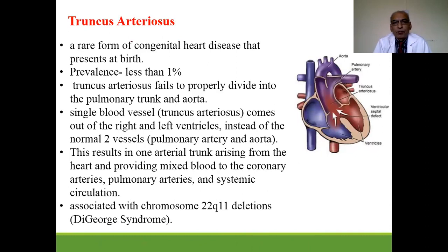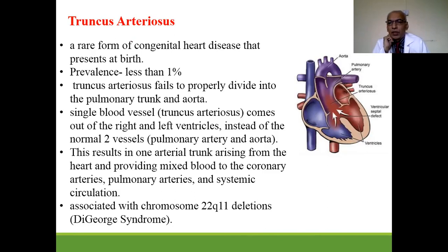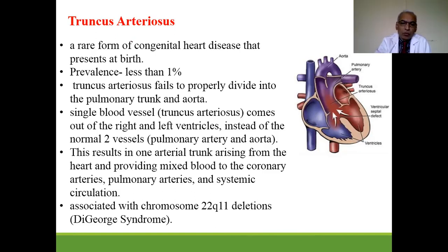Truncus arteriosus is also a congenital heart disease presenting with cyanosis at birth, occurring in less than 1% of cases. The truncus arteriosus fails to properly divide into the pulmonary trunk and aorta. A single blood vessel emerges from both ventricles instead of two normal vessels, providing mixed blood to the coronary arteries, pulmonary arteries, and systemic circulation. It is commonly associated with chromosome 22q11 deletion — DiGeorge syndrome.